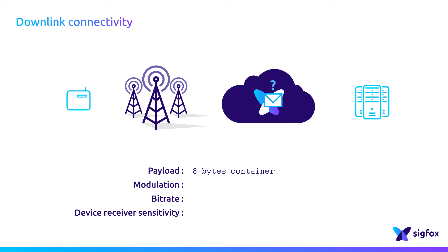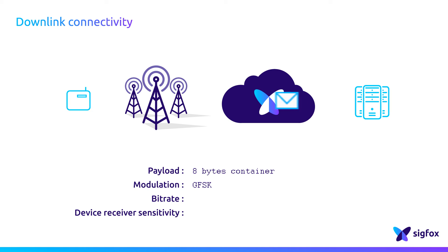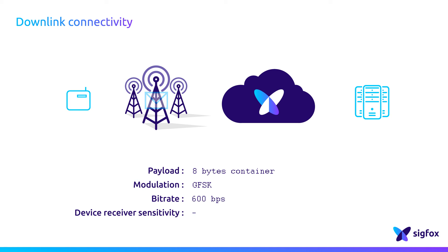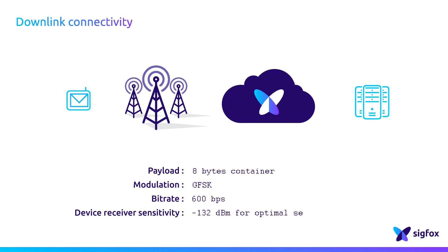Regarding modulation, downlink transmits with GFSK modulation at a bitrate of 600 BPS. Lastly, the typical sensitivity of a device, considered as a receiver in this case, is at least -126 dBm.